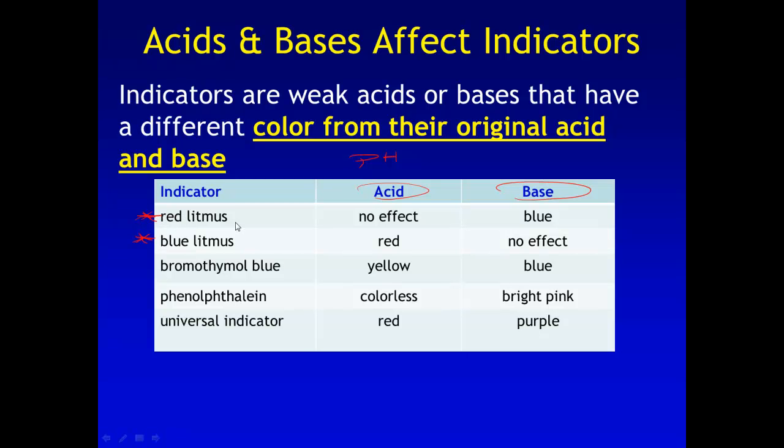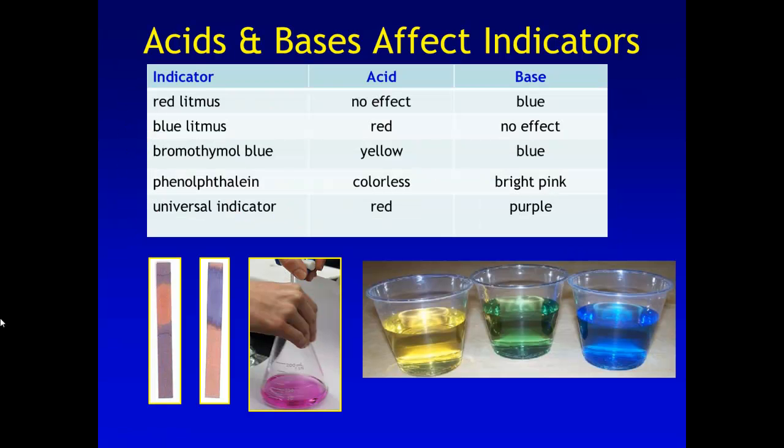So the red litmus and the blue litmus, you need to know these two for your test. I included the others because you've seen these other ones. You've seen bromothymol blue in action. You've more than likely seen phenolphthalein. And then I'm going to show you a demo with universal indicator. So again, these are the two you want to memorize, the red litmus and the blue litmus.